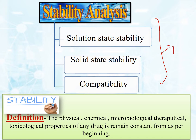Today we will study pre-formulation study. The question is: what is stability? Any drug or dosage form — before it is manufactured — its shelf life determines its stability. The definition of stability is that the physical, chemical, microbiological, therapeutic, and toxicological properties of any drug remain constant from beginning to end.